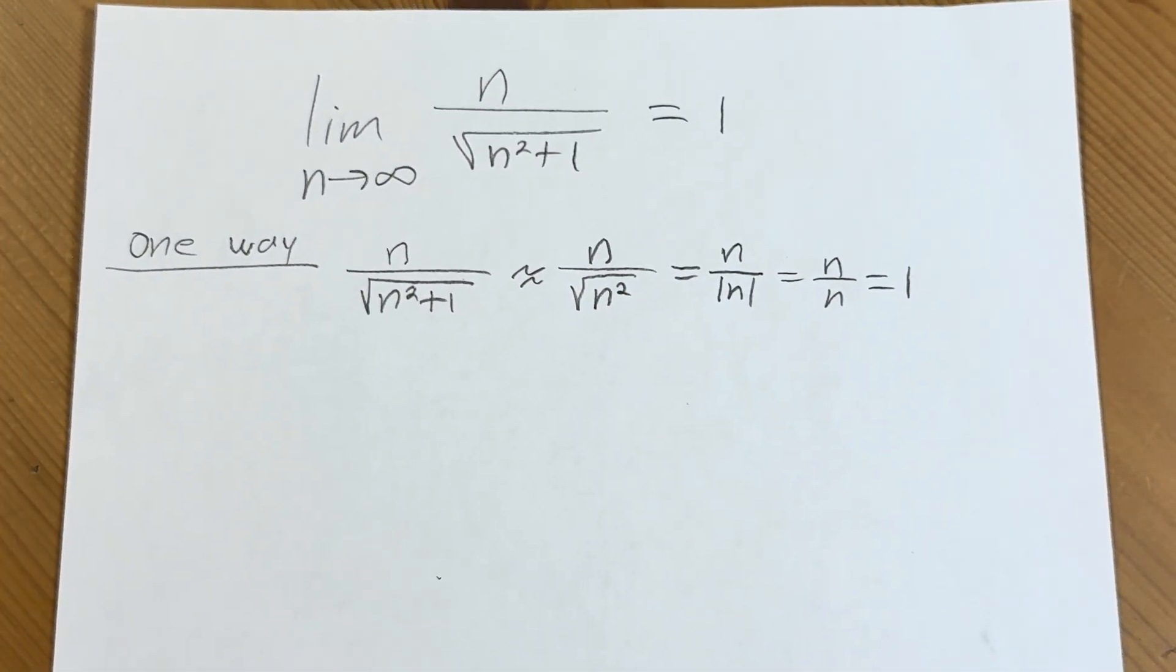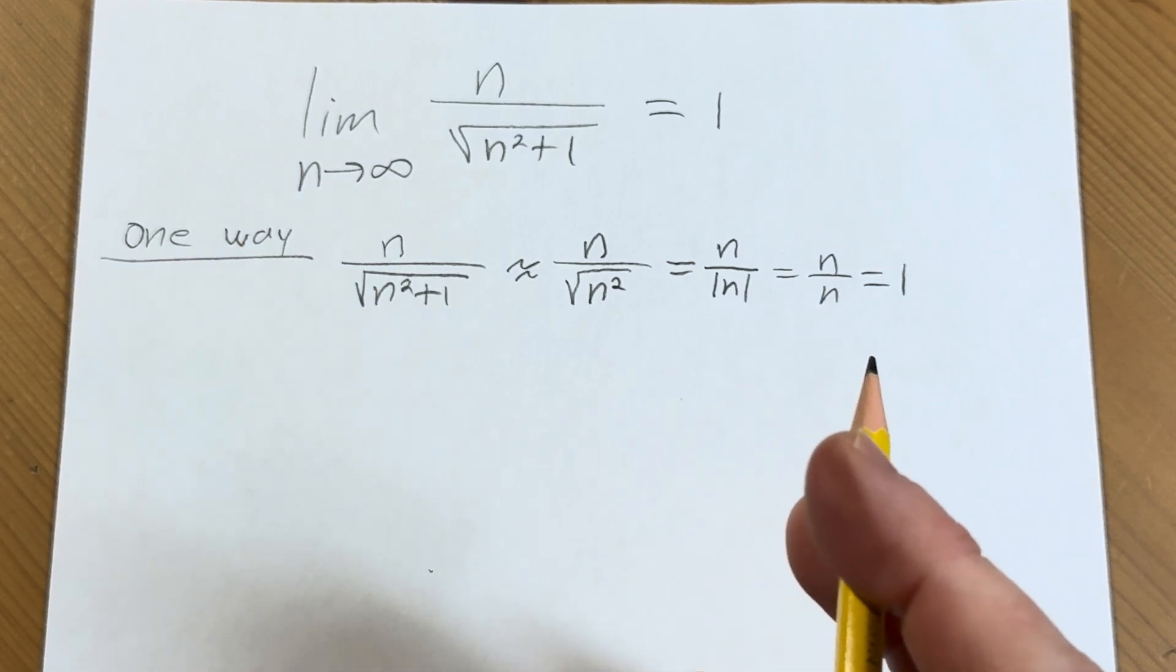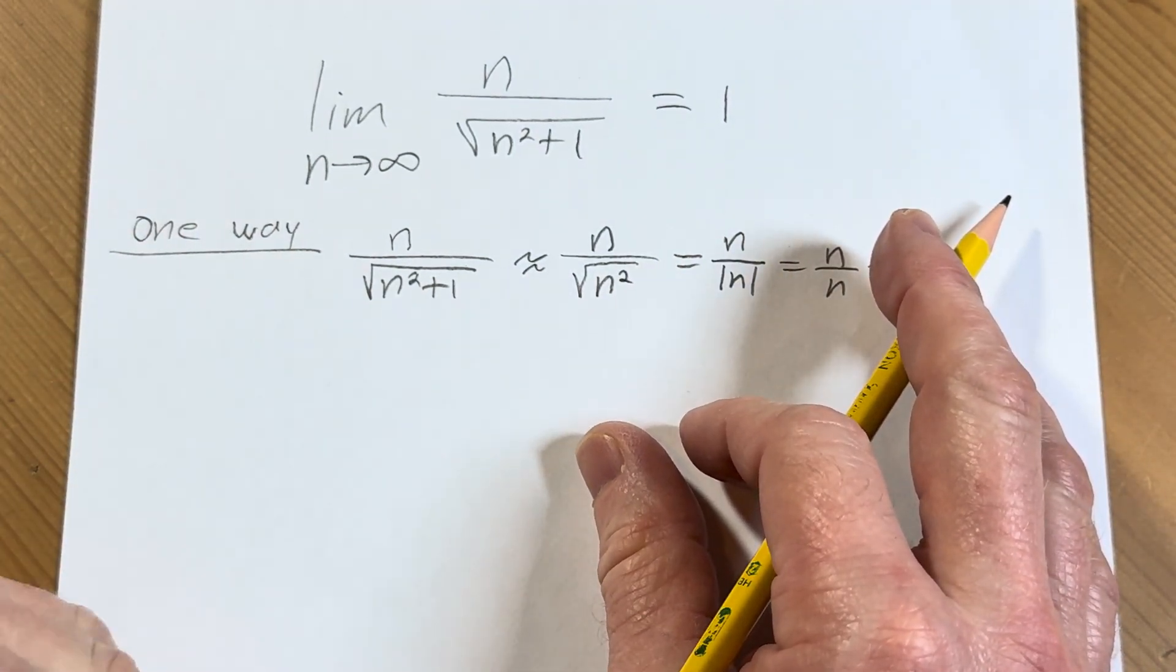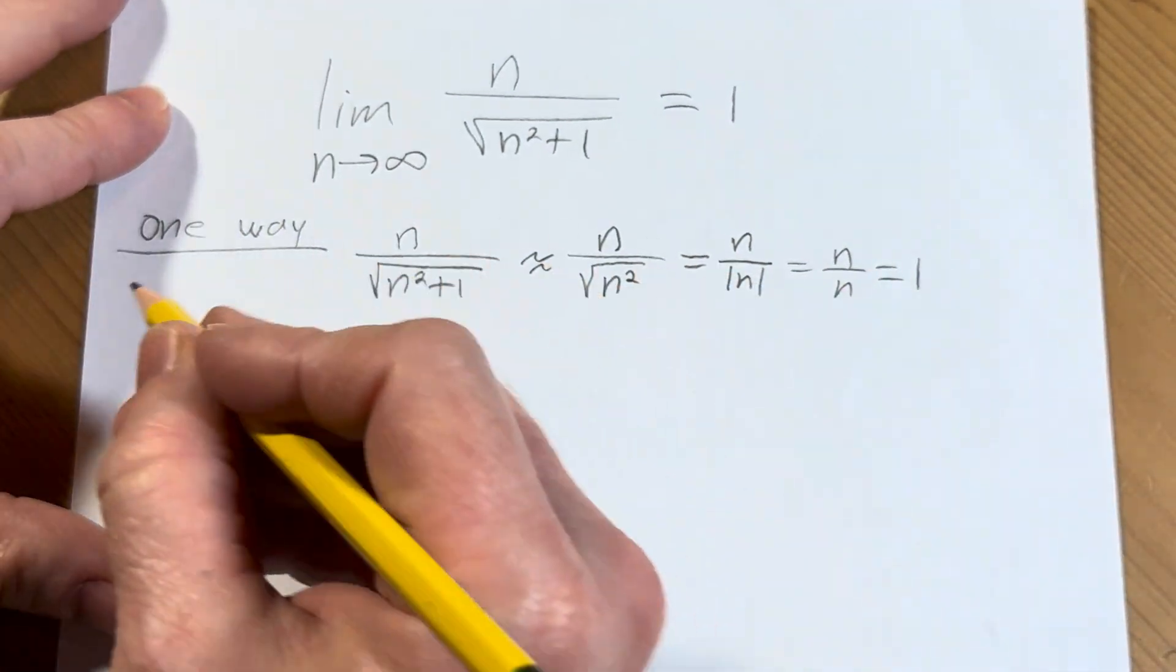So that's one way to do it, one way to think about it. Is that the best way? I don't know. Is it the worst way? I don't know. It's just one way. Another way.